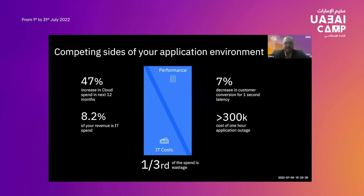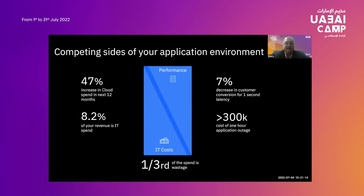In the current market, everybody is investing heavily in applications and rolling out new services. There has been a 47% increase in cloud spend among big companies, and with that, complexity is increasing everywhere. Each one-hour outage is estimated to have an impact of more than $300K on average. It is critically important for companies to monitor their IT environment, applications, and network to ensure business runs smoothly.